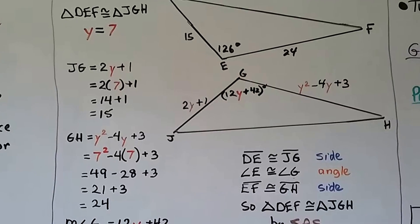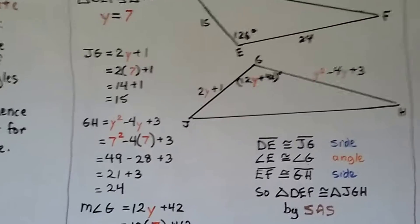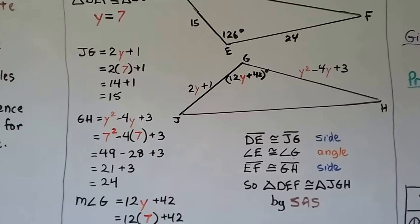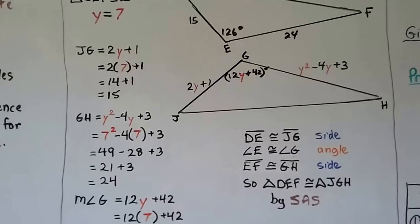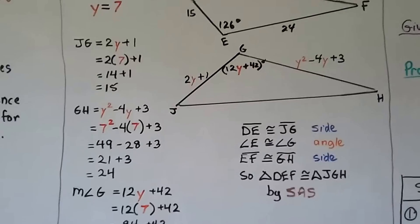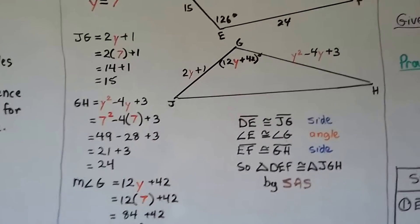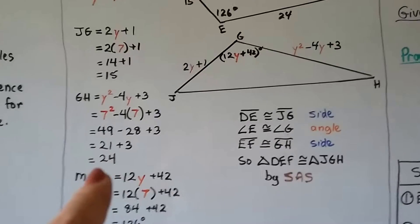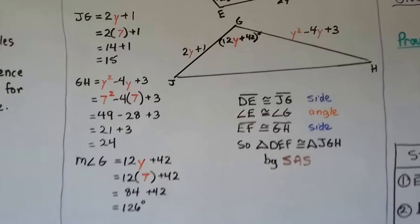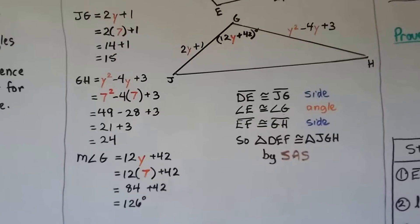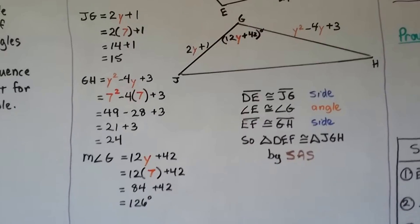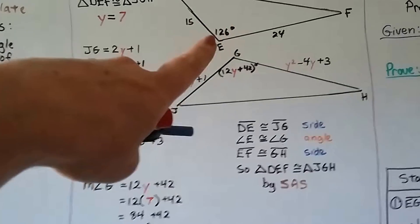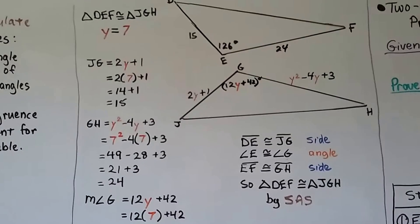And GH is y squared minus 4y plus 3. We put the 7 in as 7 squared minus 4 times 7 plus 3. We get 49 minus 28 plus 3. Remember your order of operations - we've got to go from left to right when doing addition and subtraction. We can't do 28 plus 3 first. So we do 49 minus 28, which is 21. Now we add the 3, we get 24. The measure of angle G is 12y plus 42. We put the 7 in for y and get 12 times 7, which is 84 plus 42, which is 126 degrees. So it ended up with the 15, 126 degrees, and 24, just like DEF.